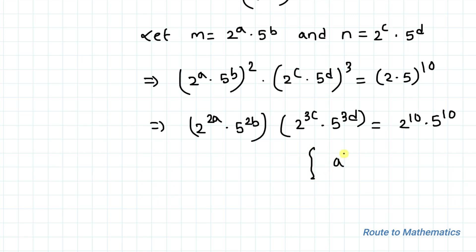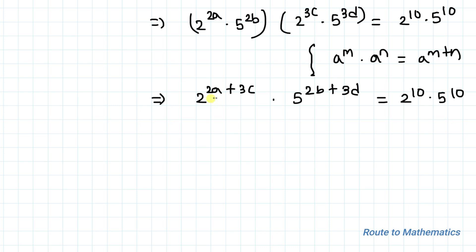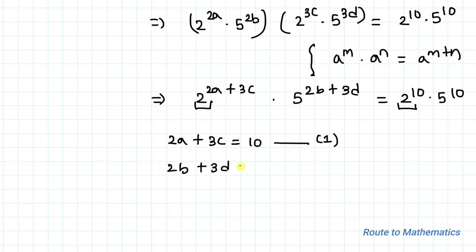Using the exponential rule a^m · a^n = a^(m+n), we get 2^(2a+3c) · 5^(2b+3d) = 2¹⁰ · 5¹⁰. Equating exponents with the same base: 2a + 3c = 10 (equation 1) and 2b + 3d = 10 (equation 2).